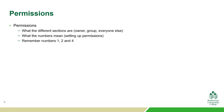To summarize, when talking about permissions, we looked at what the different sections are: the owner (the person who created the file or directory), the group (which the file or directory belongs to), and everyone else. We also looked at what the numbers mean for setting up permissions — we need to remember numbers one, two, and four. By understanding those, we can set up any combination, from no permissions at all to full permissions.